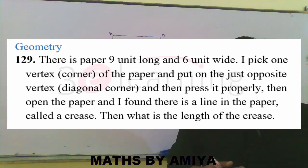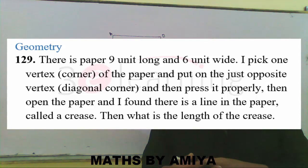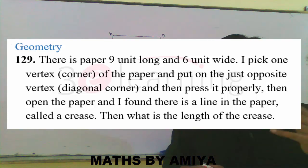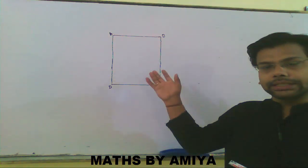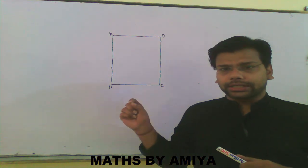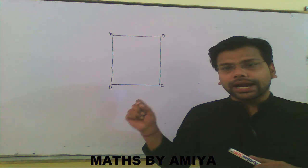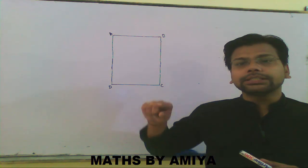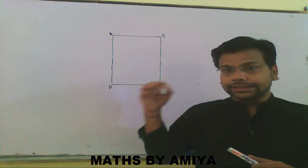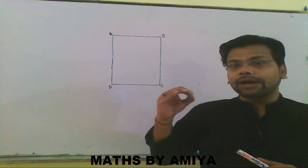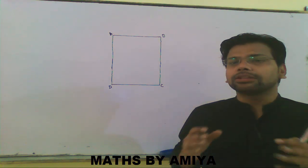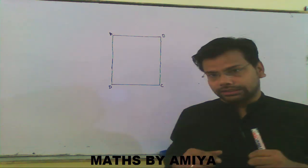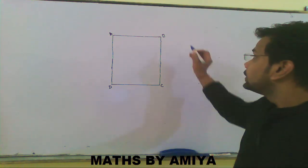Hello friends. The question is quite simple but not easy if you don't know the concept. We have a paper ABCD, and we have to pick one vertex and put it onto the diagonally opposite vertex. That fold creates a crease — which is nothing but a line — and we have to find the length of that crease.